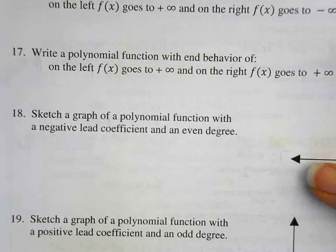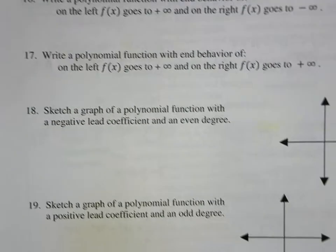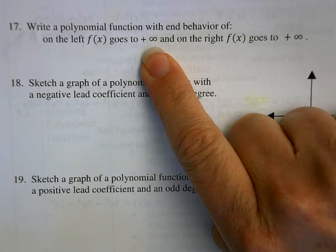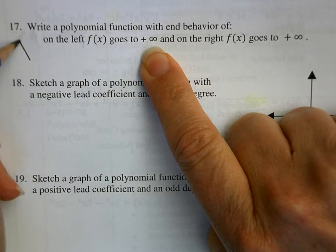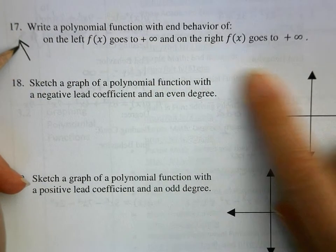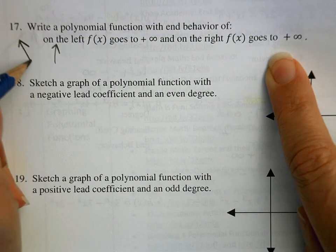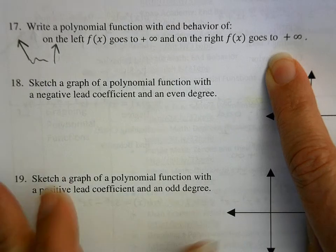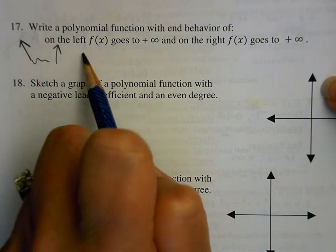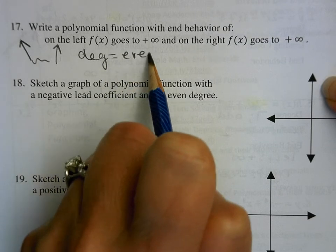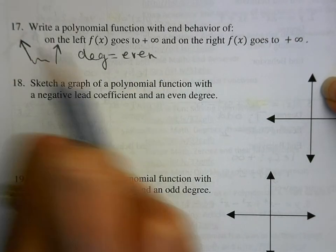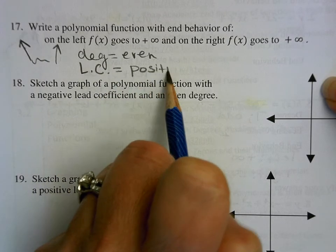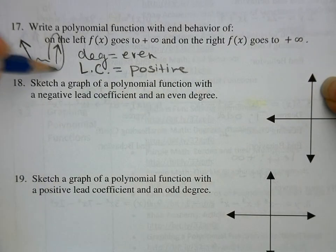Number 17 — we want to write a polynomial function with given end behavior. The left is going to go to positive infinity and the right is also going to go to positive infinity. So because they're going in the same direction, I know my degree has to be even, and because the right side is positive, my leading coefficient has to be positive.